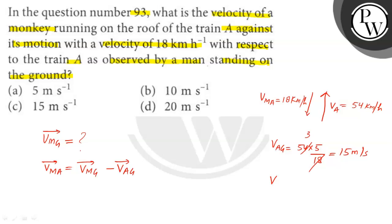And velocity of a monkey with respect to train A is given 18 km per hour that will be 18 into 5 by 18 that is 5 meter per second.